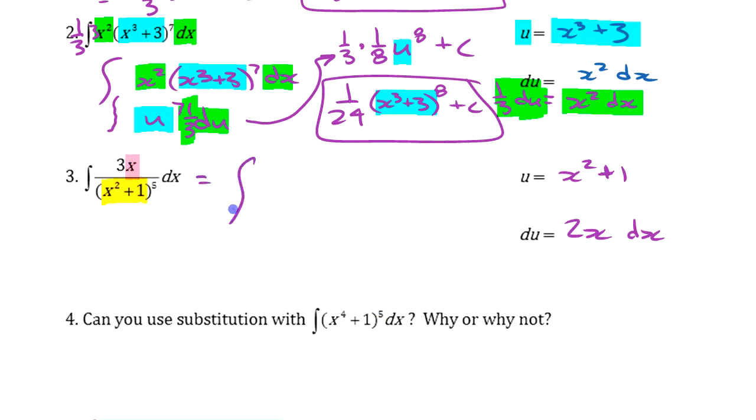We can change this to, we can put the 3 out in front. We can say, put all this other stuff here, x squared plus 1 to the 5th dx. If we want a 2 here, we can just divide by 2 out in front. And then it'll work out. Or again, we could have changed this over here, but this is a good way as well.